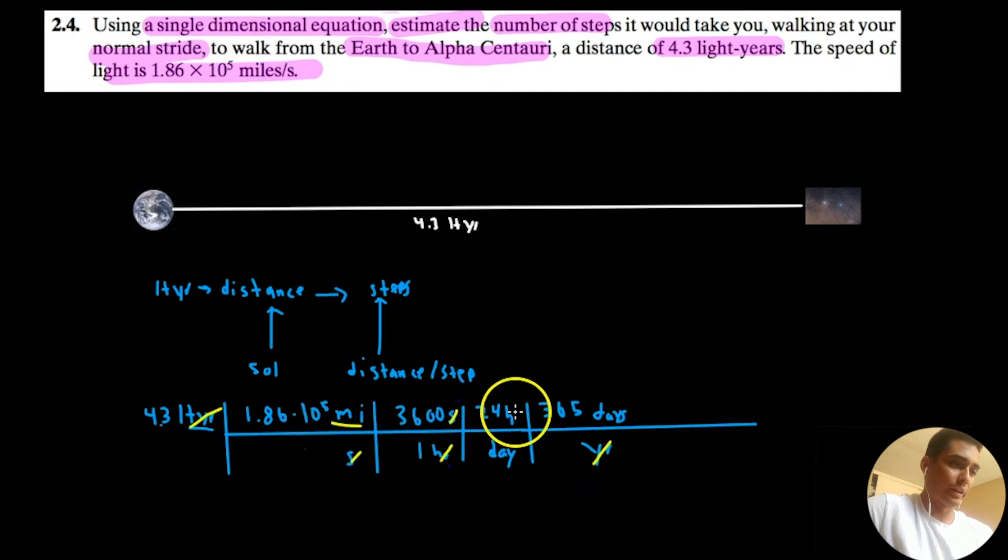This year cancels out and we are left with miles. So, seconds, seconds, hours, hours, days and days. So, perfect. Now, if we were to calculate this, we would have the distance that light would travel in 4.3 light years. So, this is good.